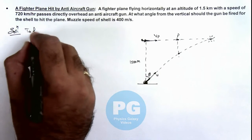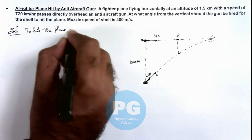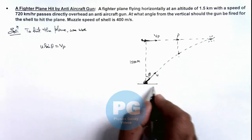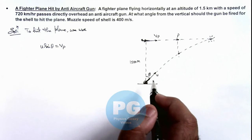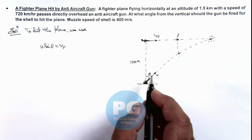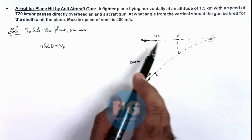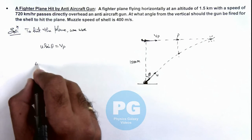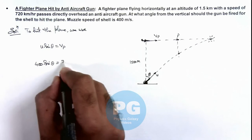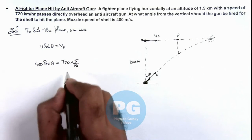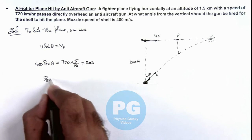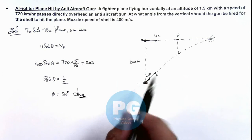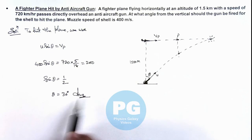To hit the plane, we write: u·sinθ must equal vp — the horizontal speed of the shot must equal the plane speed. The muzzle speed u is 400 m/s and the plane speed is 720 kph, converting to meters per second gives 720 × (5/18) = 200 m/s. So 400·sinθ = 200, giving sinθ = 1/2, and therefore θ = 30 degrees. The gun's barrel must be at an angle of 30 degrees with respect to the vertical to hit the plane.